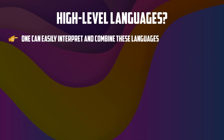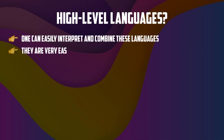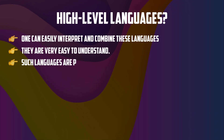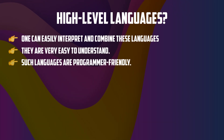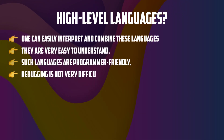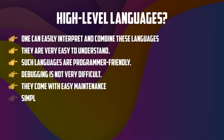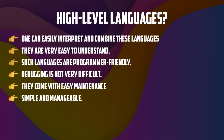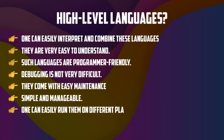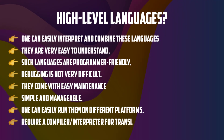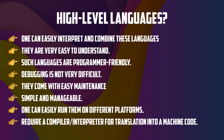What are high-level programming languages? One can easily interpret and compile these languages compared to low-level languages. They are very easy to understand and are programmer-friendly. Debugging is not very difficult compared to low-level languages. They come with easy maintenance, are simple and manageable, can easily run on different platforms, and require a compiler or interpreter to translate into machine code.